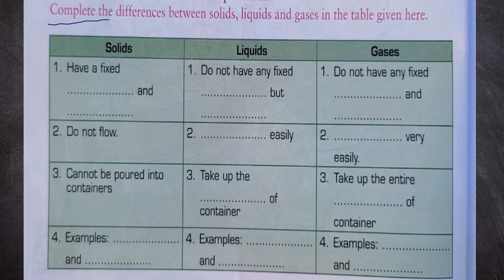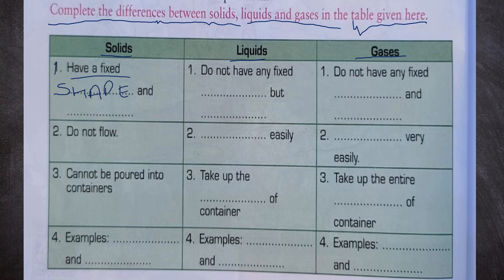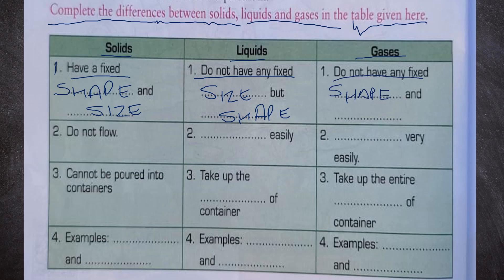Now let us complete the differences between solids, liquids and gases in the table. Number 1: Solids have a fixed shape and size. Liquids do not have any fixed size but they take the shape of the container. Gases do not have any fixed shape and size. Number 2: Solids do not flow. Liquids flow easily. Gases flow very easily.